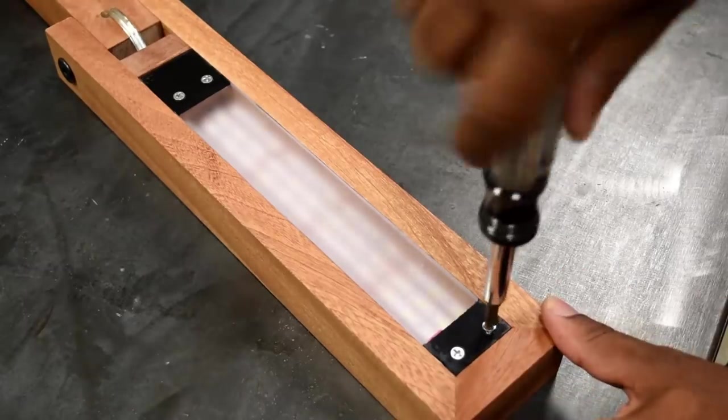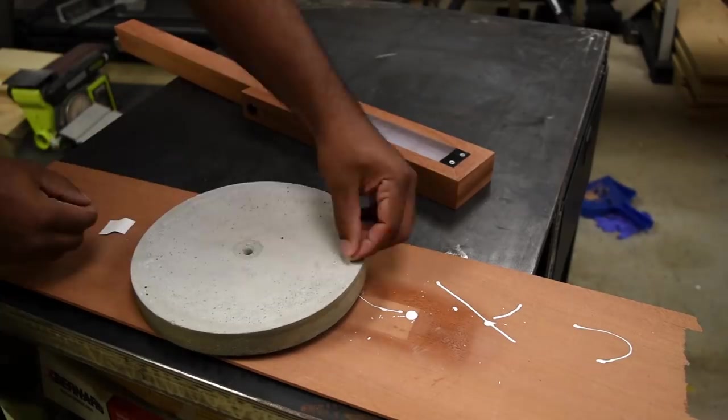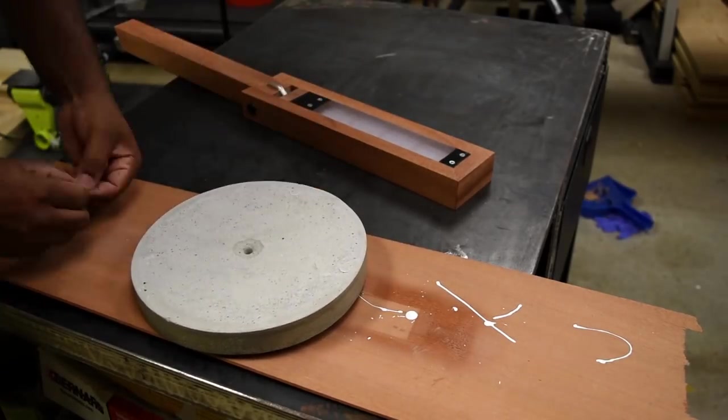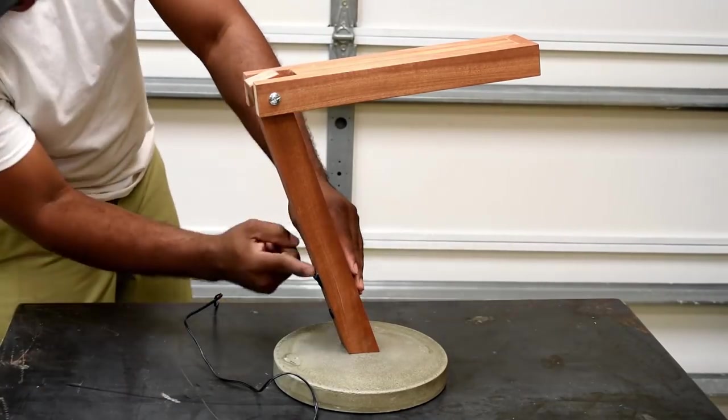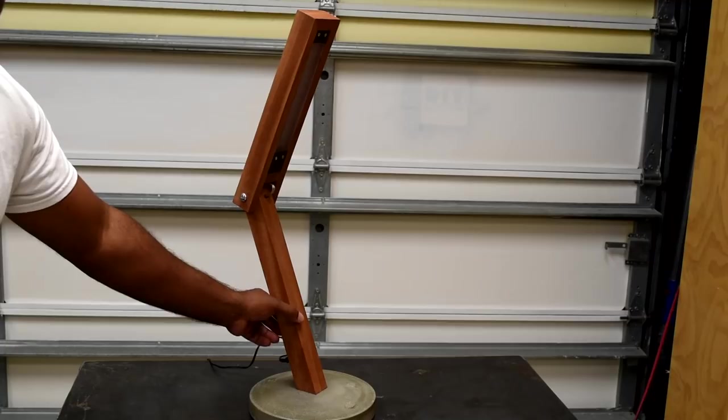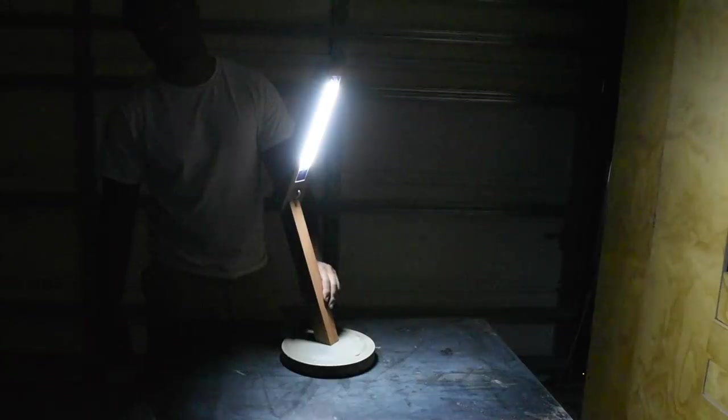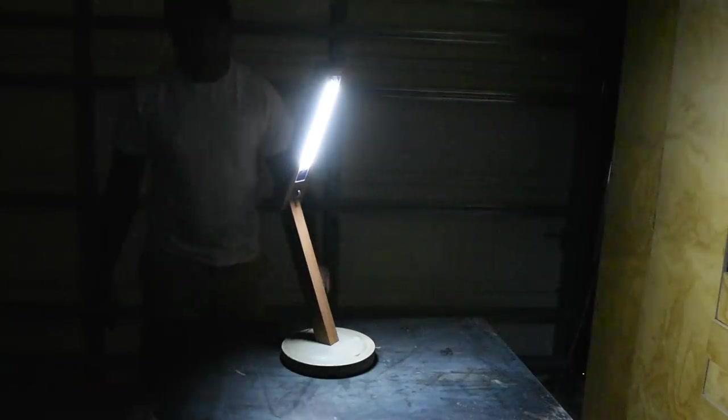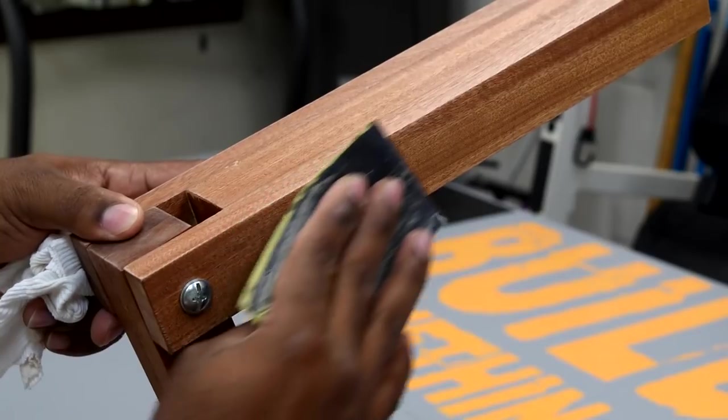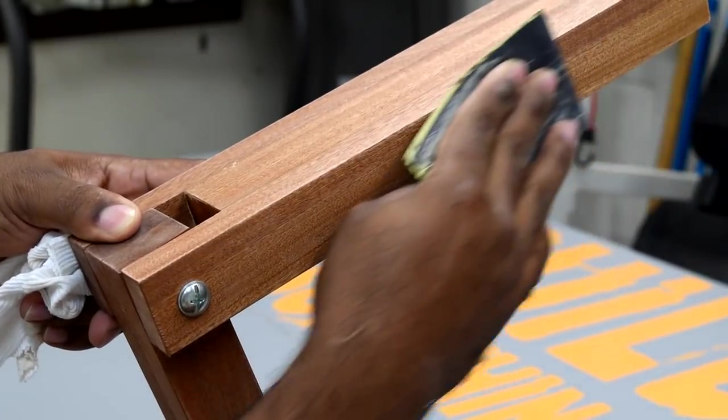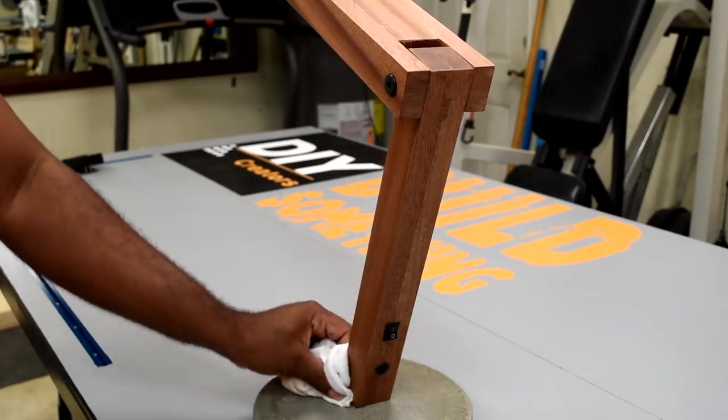Now plug the lamp in and give it a test. At this point the lamp is complete and I'm going to take a 400 grit sandpaper, lightly sand in the same direction as the grain, and then I'll apply the last layer of poly.